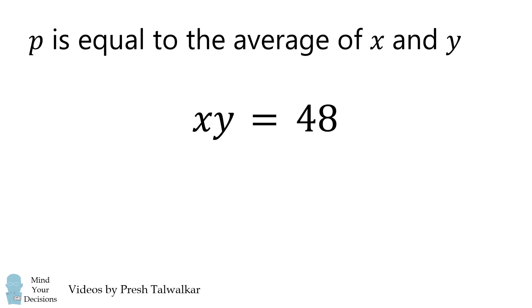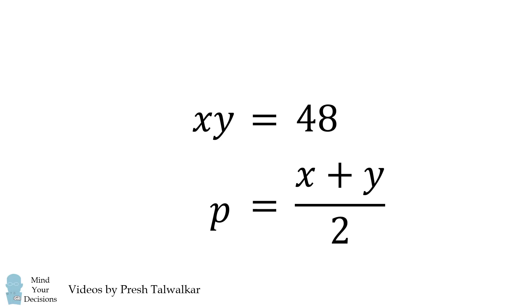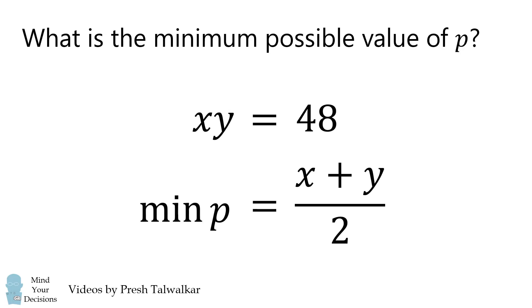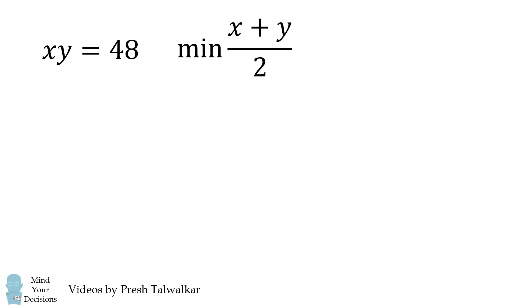P is equal to the average of X and Y. Thus P is equal to X plus Y all over 2. We want the minimum value of P. This will be the minimum value of X plus Y all over 2. How do we proceed from here?